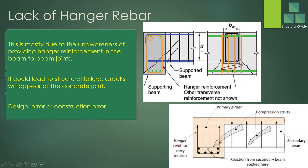Lack of hanger reinforcement. This is not a commonly discussed topic, but it has significant value and we must attend to it because structures can fail due to this. In this figure, this is the primary beam, and we have a secondary beam supported on the primary beam. The forces from the secondary beam will be applied on the primary beam, and there should be links as shown to carry this load.